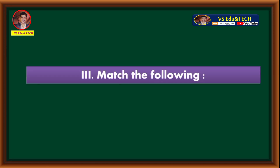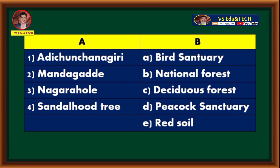Third main — match the following. List A: Adichunchanagiri, Mandagathe, Nagarhole, Sandalwood Tree. List B: Bird Sanctuary, National Forest, Deciduous Forest, Peacock Sanctuary, Red Soil.